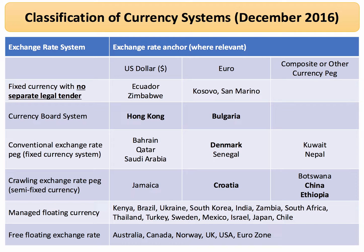Nepal and Kuwait have a fixed exchange rate against a basket of currencies. Some countries have a crawling peg or semi-fixed exchange rate — China allows the yuan or renminbi to move a little bit each day, but it's controlled, making it a hybrid system. Ethiopia and Croatia also have semi-fixed exchange rates. Increasingly, countries are moving towards managed floating exchange rates, including Brazil, Turkey, Mexico, Chile, and India.